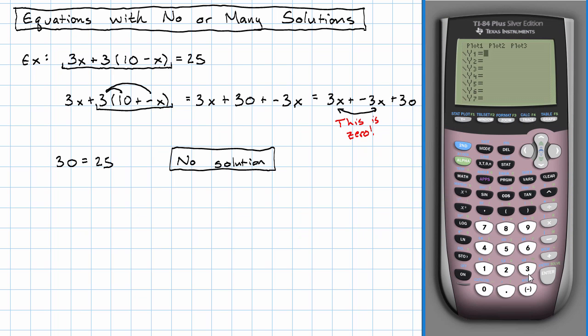I'm going to say 3x plus 3(10 minus x) in my y1. And I'm going to look at the table. Notice, no matter what value x has, that left hand side is always 30.